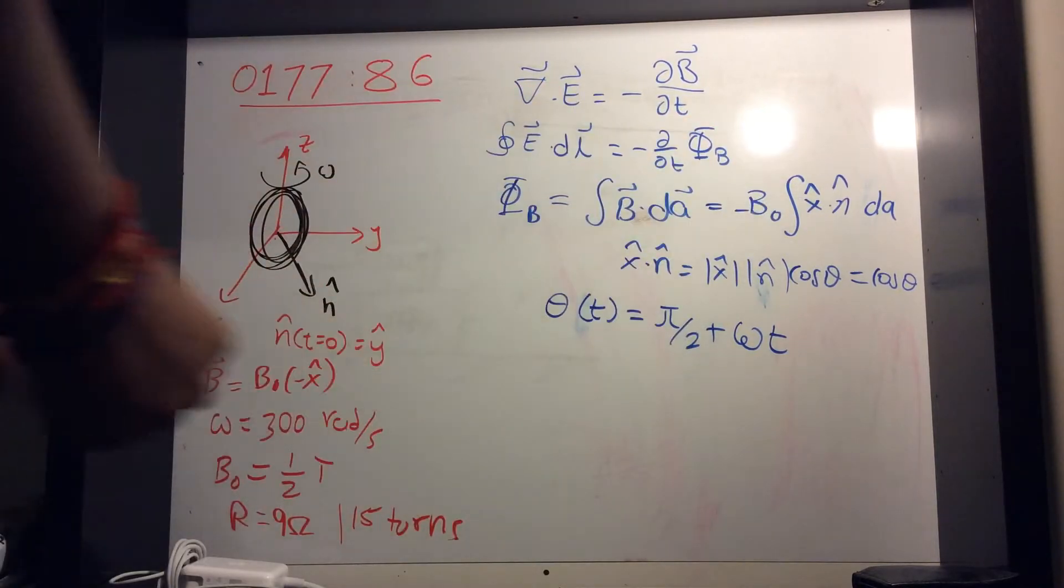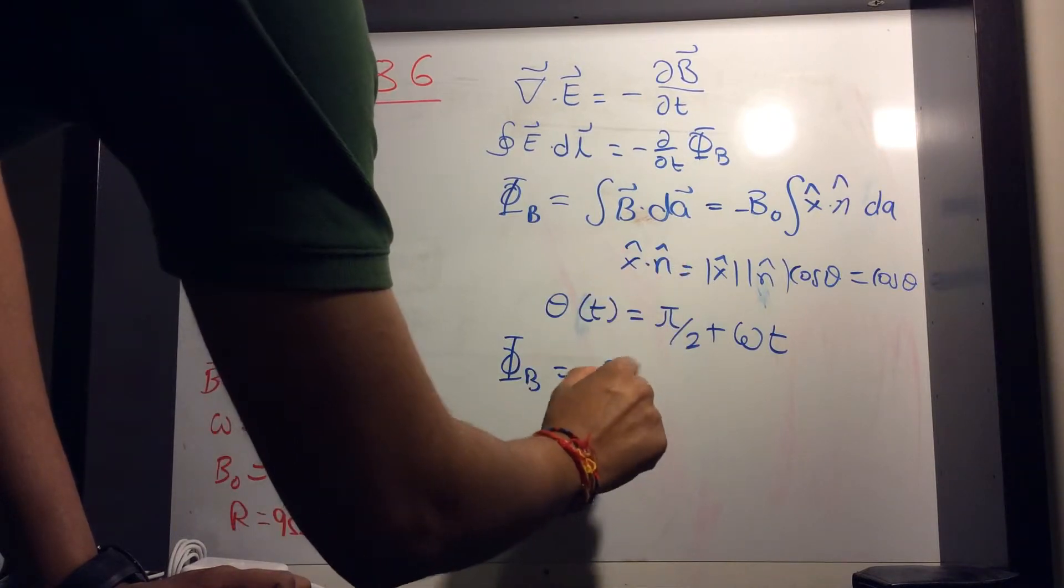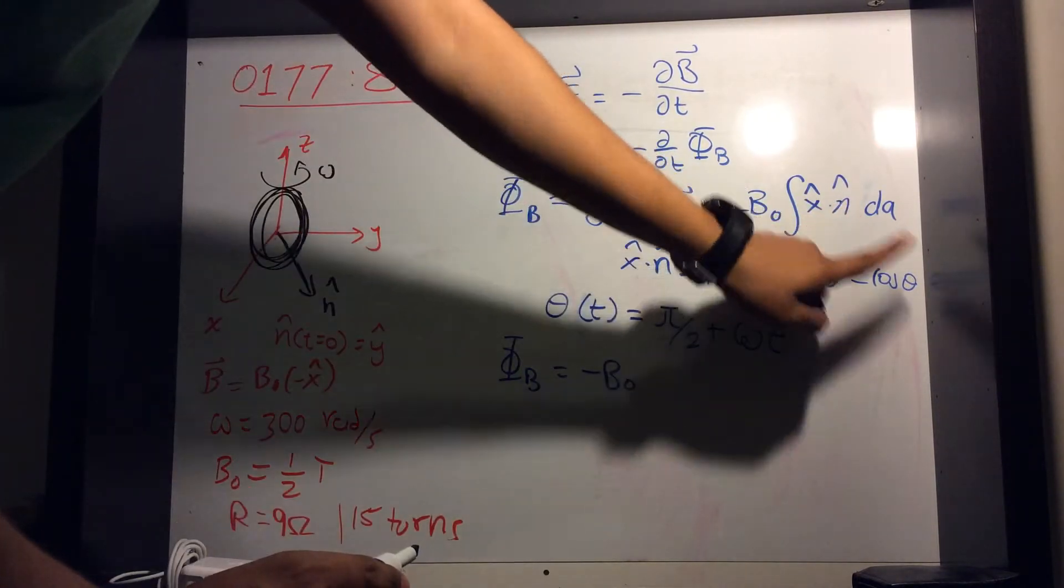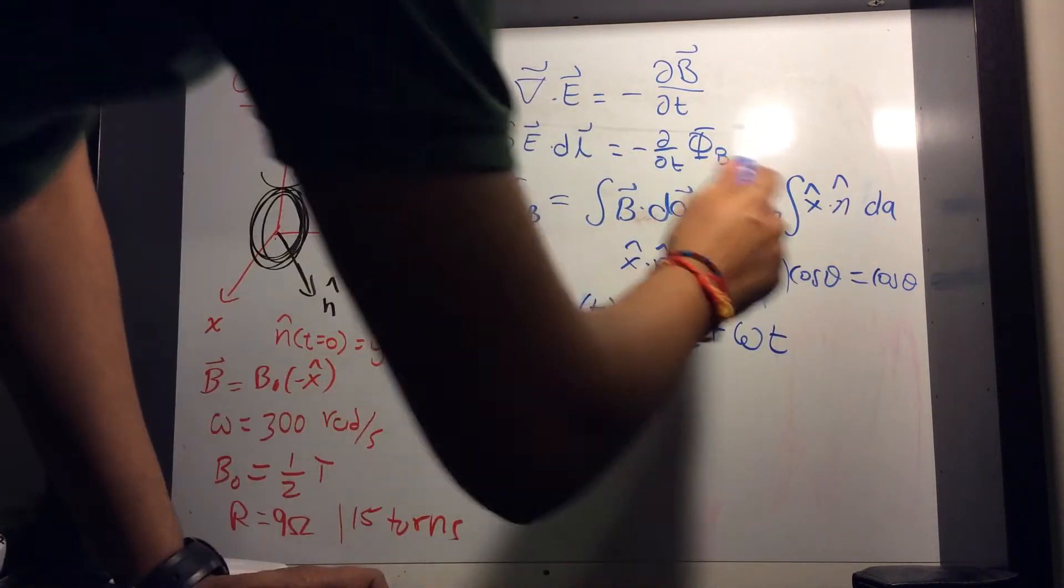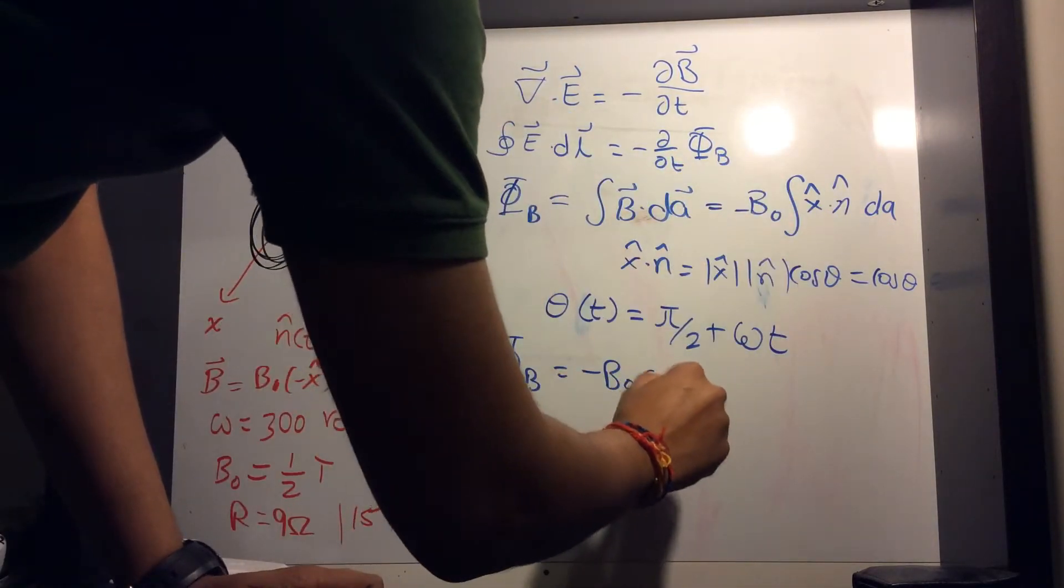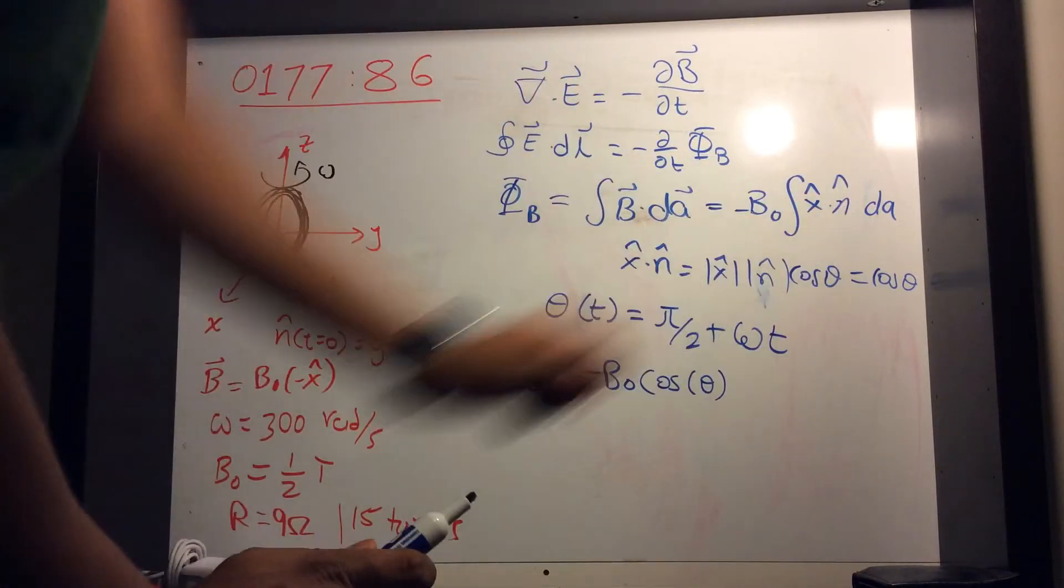So now let's plug that in. So you get phi B is equal to minus B naught. Now y dot n is cosine of theta, but cosine of theta doesn't depend on area element. So it could come out, cosine of theta, and now we just have integral of dA.